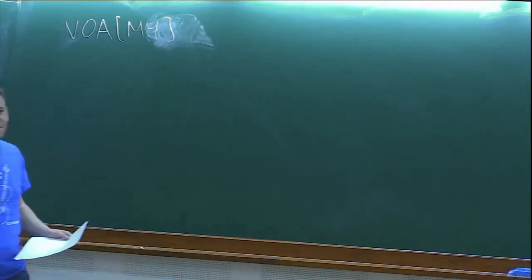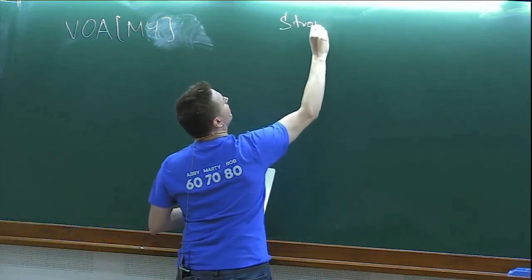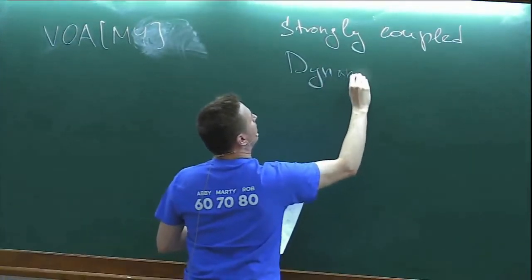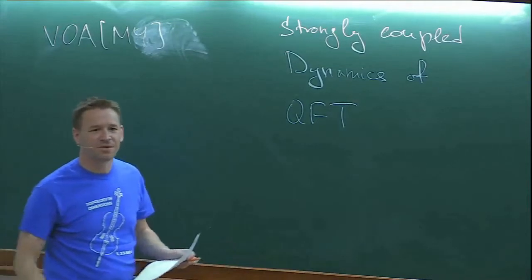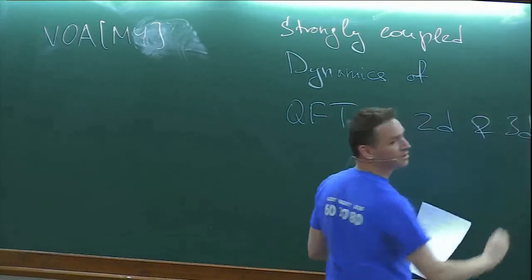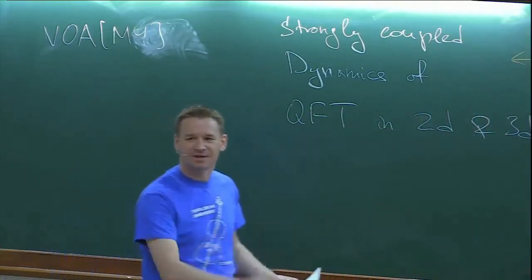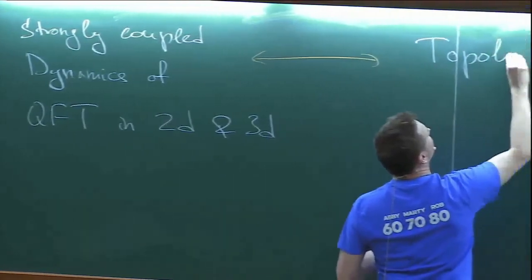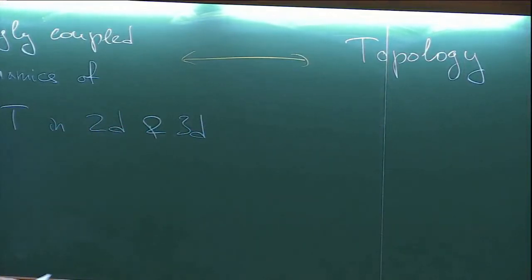The goal of the lectures will be to explain a very rich connection between strongly coupled dynamics of quantum field theories — low-dimensional quantum field theory, specifically two and three dimensions — and, on the one hand, what you might call modern Langlands correspondence, and on the other hand, topology, specifically low-dimensional topology of three-manifolds and four-manifolds, which is partly where M4 comes into the story.